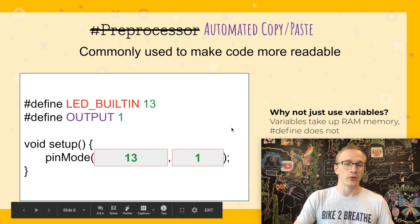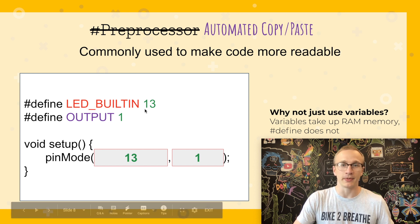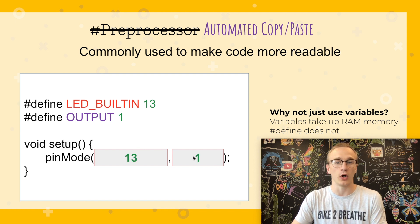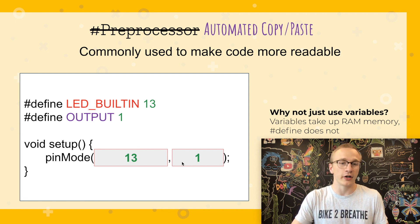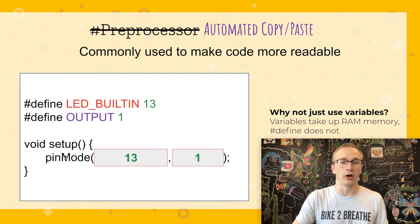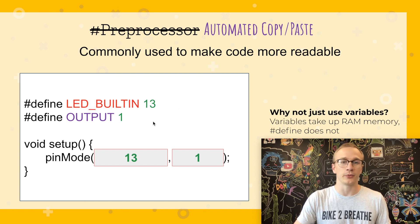You might be wondering why not use variables? Well, define statements are copy-paste — this will replace your code, the exact same as if you put in 13 and 1 as an argument. Whereas if you use a variable, it's going to allocate some memory in RAM, store the variable, and then reload that variable every time you're trying to call pinMode. So using define statements is very nice when you don't have a whole lot of RAM memory at your disposal.